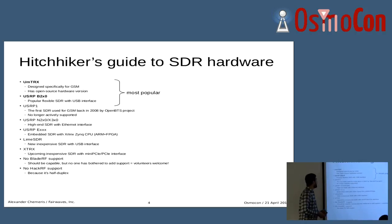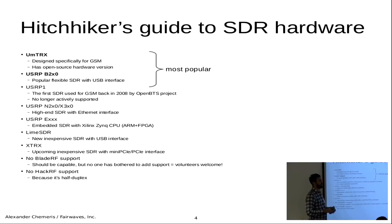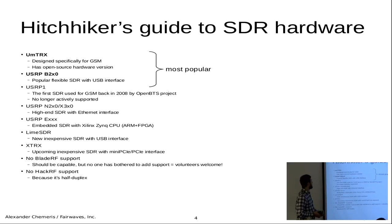A small overview of SDR hardware currently available for OsmoTRX. The two most popular, by my personal assessment looking at the mailing list, are the UMTRX — which was designed specifically for GSM, and whose laboratory version is open-source hardware with all sources published — and the USRP B200, which is just a very popular software-defined radio in general. That's why many people are using it with Osmocom — they already have it. The USRP 1 was the very first one ever used for GSM but is no longer manufactured.